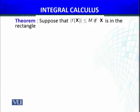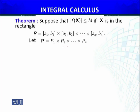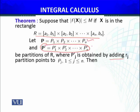First result: Suppose |f(x)| ≤ M for x in a rectangle R — meaning f is bounded over that rectangle. Let P be a partitioning and P′ another partitioning of the same rectangle R, where P′ is obtained by adding r_j partition points to P_j. This means P′ is a refinement of P.